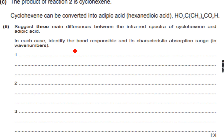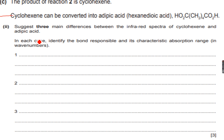The product of reaction 2 is cyclohexene, so we do not need to know what reaction 2 is. The main part of the question starts here: cyclohexene can be converted into adipic acid, which is hexanedioic acid — it has two carboxylic acid groups. The question asks for three main differences between the infrared spectra of cyclohexene and adipic acid, identifying the bond responsible and its characteristic absorption range in each case.